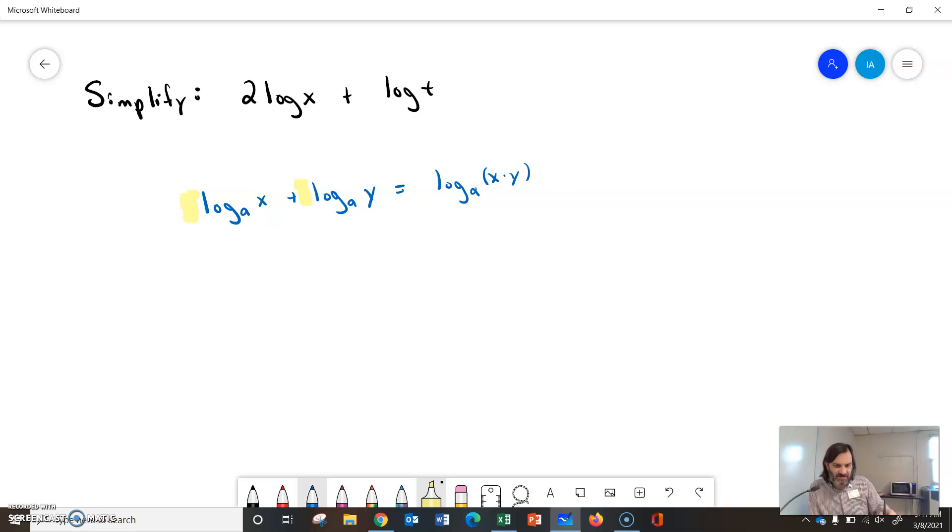So we're going to use a different property to start with, which is b times log base a of x. So if we have a coefficient from the logarithm, we'll move it in as an exponent. So log base a of x to the b. So we're going to take this 2 out front and move it in as an exponent.